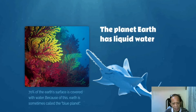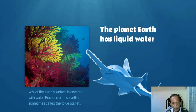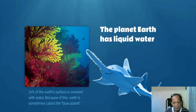Number one: the planet Earth has liquid water. Alam naman natin na water is a very important component of life. It contributes to the continuity of life on the planet Earth. In fact, 70 percent of the Earth's surface is actually covered with water — kaya nga tawag natin sa Earth ay the blue planet, because of the amount of water present in our planet.